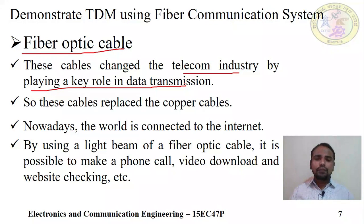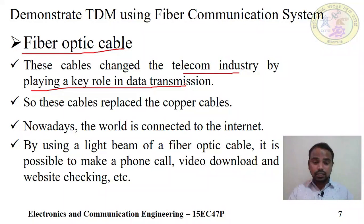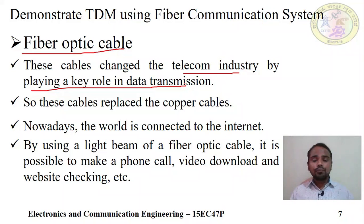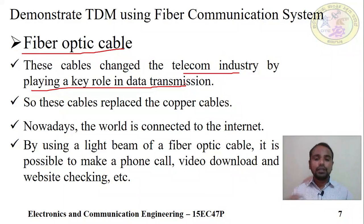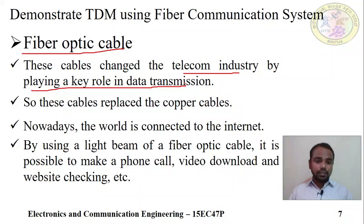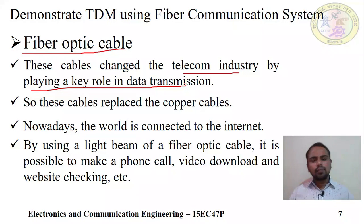Intercontinental internet cables — the cables used to connect the internet between continents — are also fiber optic cables. Fiber optic cable uses light beams to transmit data; it does not use electrical signals. Light beams are used to carry the signal. Its applications include phone calls, video transmission and reception, website browsing, and internet surfing.